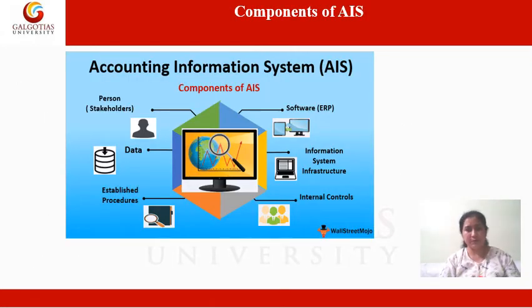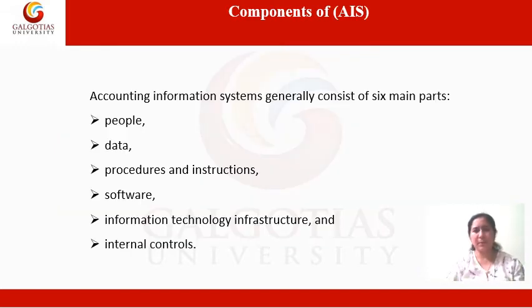This image taken from Wall Street Mojo shows the components of accounting information system. These components consist of people or specifically stakeholders, data, established procedures, software specifically ERP systems, information system infrastructure, and internal controls. People or stakeholders are one of the most crucial components for successful implementation of accounting information system. From start to end of every accounting aspect, there is a stakeholder who feeds information into the system, collects, analyzes, reports, etc. There is also another person or stakeholder who needs information.